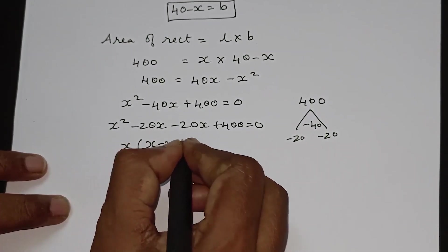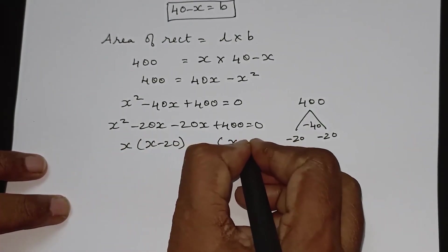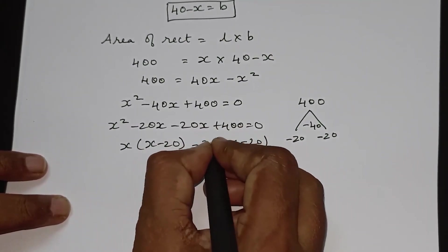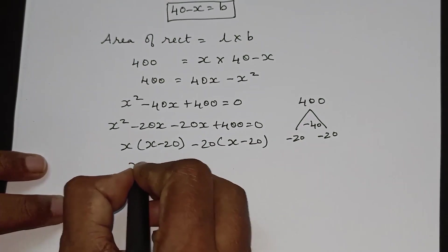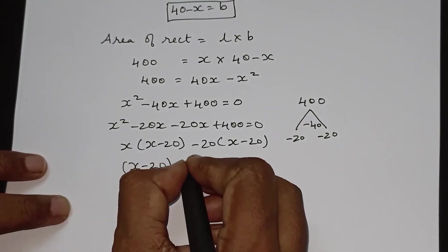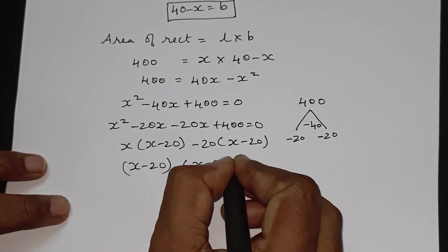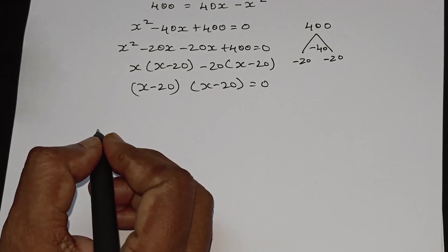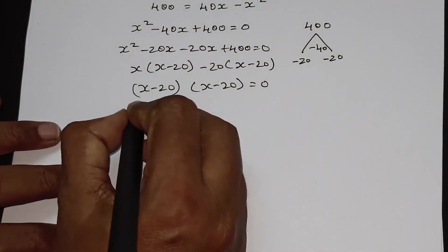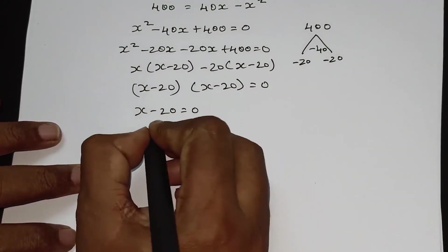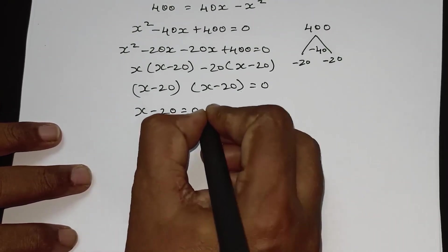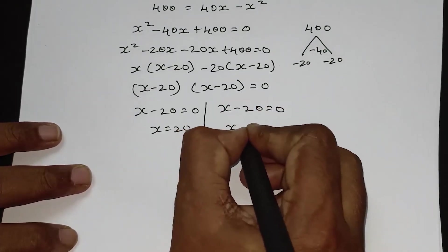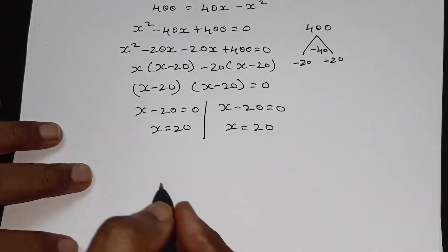So x² − 20x − 20x + 400 is equal to 0, which factors as (x − 20)(x − 20) is equal to 0. Therefore x − 20 is equal to 0, so x is equal to 20.